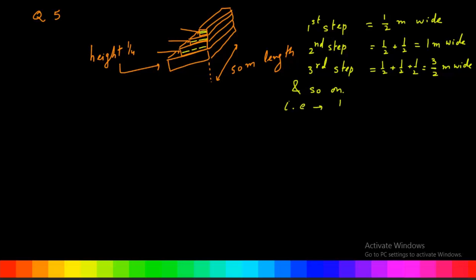And so on. That is 1/2, 1, 3/2, and so on. Here A is equal to 1/2, D is equal to 1 minus 1/2, equal to 1/2, and N is given as 15. We have to find out the volume of concrete.